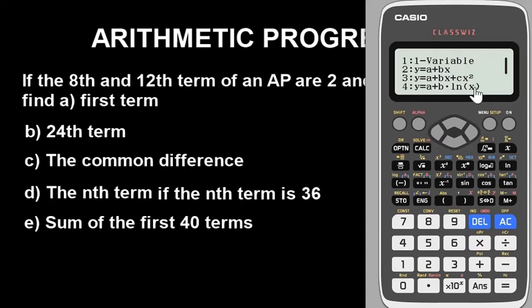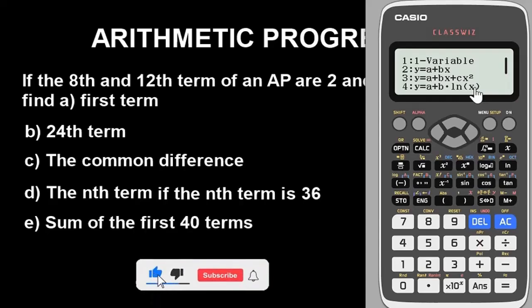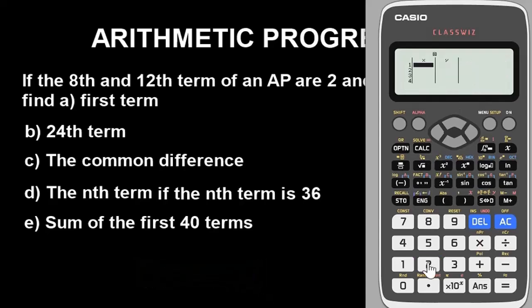Once you get here, this step is very critical — if you miss it, you've missed everything. For arithmetic progression, you go with option 2. If it were geometric progression, the option would be different. For arithmetic progression it is option 2, so select option 2 for linear regression.